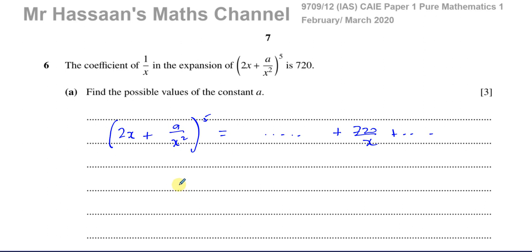There's a way to get this answer really quickly, which I'll show you. But first, some background on dealing with such questions. In P1 of the AS level of Cambridge, and also in P2 which is AS level of Edexcel, we use binomial expansion but we only deal with positive integer powers. We don't deal with negative powers nor fractional powers. That comes later in A2, which is P3 in Cambridge and P3 and P4 in Edexcel.